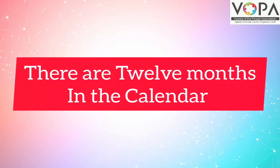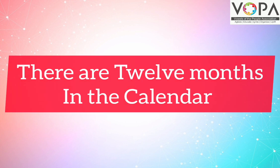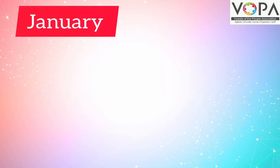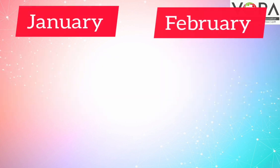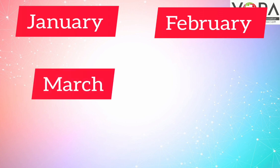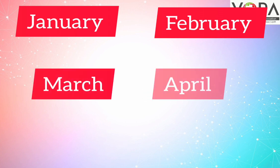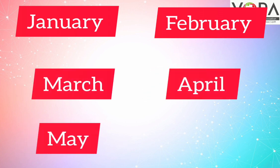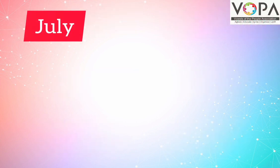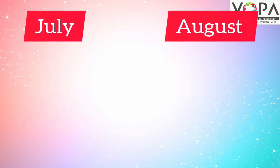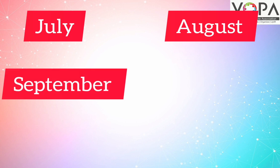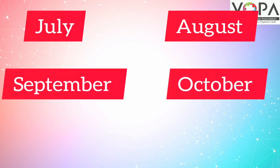There are 12 months in the calendar: January, February, March, April, May, June, July, August, September, October, November, December.